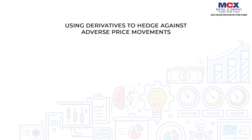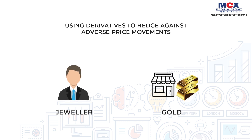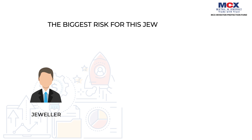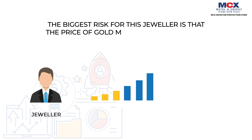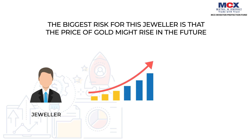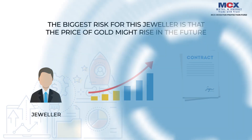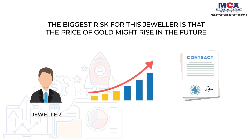Hedging is a tool to manage price risk. Consider the situation of a jeweller who uses gold as raw material. The biggest risk is that the price of gold might rise in the future. To protect against this risk, the jeweller enters into a buying gold futures contract to lock in the price. The price agreed upon to buy gold is called the futures price. By buying a futures contract, the jeweller has gone into a long hedge.